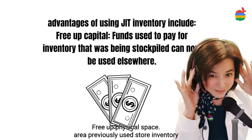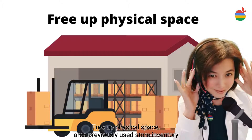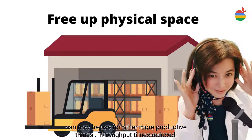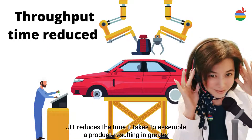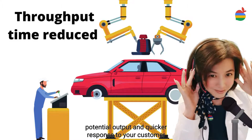Free-up physical space: areas previously used to store inventory can now be used for other more productive things. Throughput times reduce: JIT reduces the time it takes to assemble a product, resulting in greater potential output and quicker response to your customer.